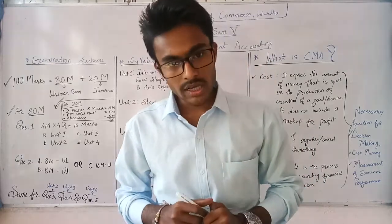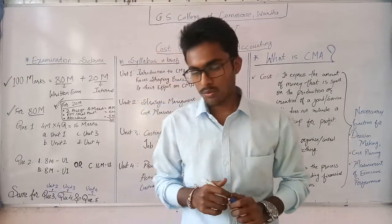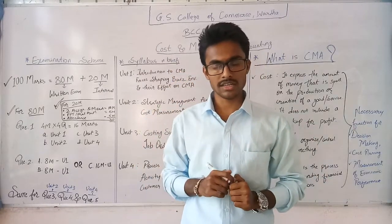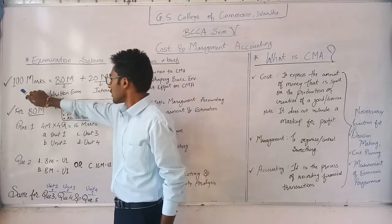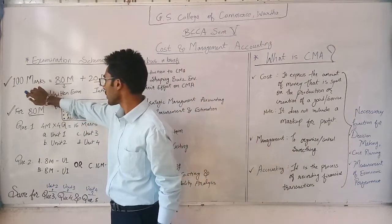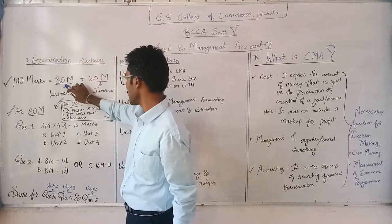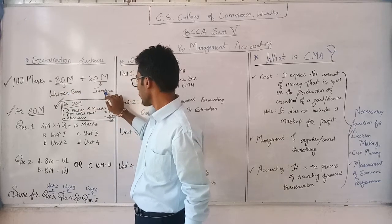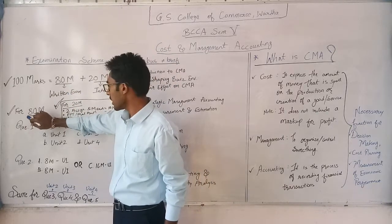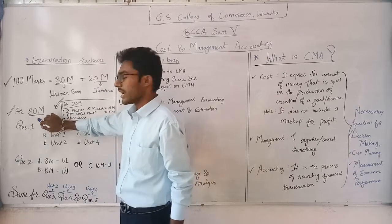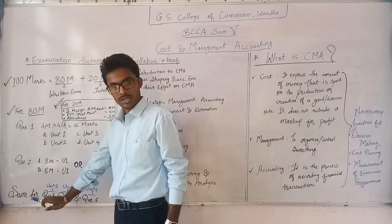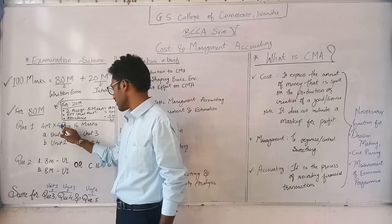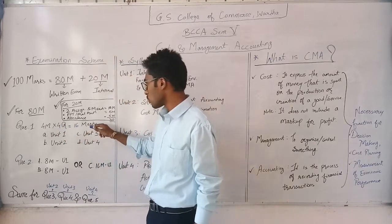We will start with the Examination Scheme. The examination scheme for CMA, i.e., Cost and Management Accounting, is as follows: you will get a full paper consisting of 80 plus 20, that means 100 marks total — 80 marks for the written exam and 20 marks for internal. The 80 marks consist of 5 questions. In question number 1, you will get 4 questions, 4 marks each, making a total of 60 marks.